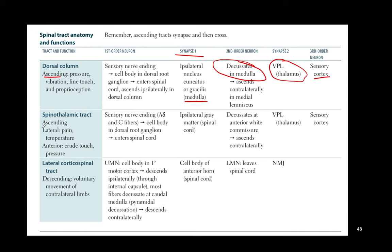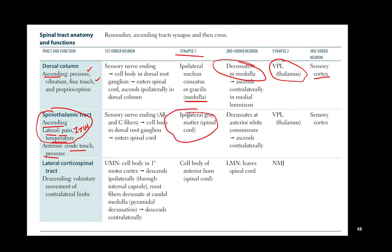The spinothalamic tract — these are ascending tracts. The lateral spinothalamic tract carries pain and temperature; the anterior carries crude touch and pressure. Really think of the spinothalamic tract as carrying pain, itch, and temperature — PIT. Crude touch and pressure is less important because even if lost, you'd still have pressure and touch from the dorsal column. The first-order neuron enters the spinal cord and synapses in the posterior horn — first synapse is in the spinal cord.